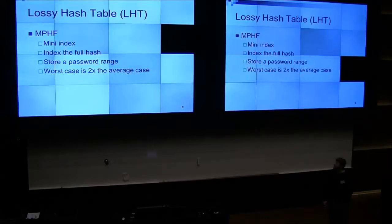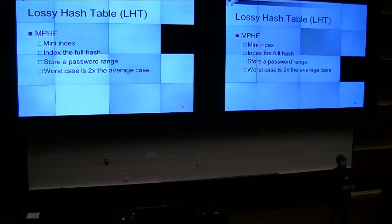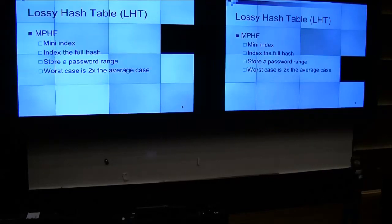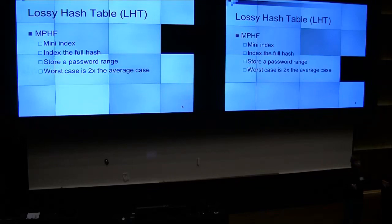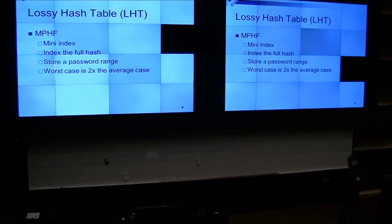Lossy hash tables. One method is to use a minimal perfect hash function. First you split data into large baskets, each encoded to no more than 64K. We do this for two reasons: we can run them in parallel, and the minimal perfect hash function needs all entries in memory — which is several terabytes when you scale up.